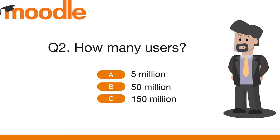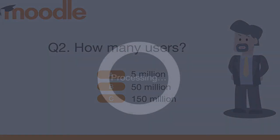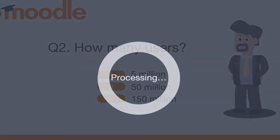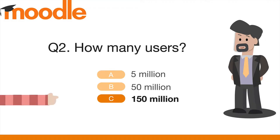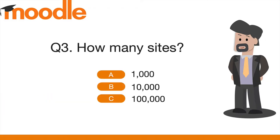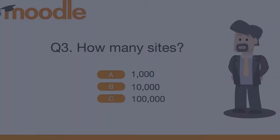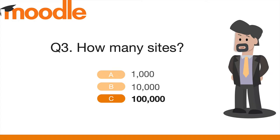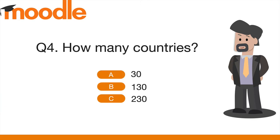How many registered users — five million, fifty million, or one hundred and fifty million? How many registered Moodle sites — one thousand, ten thousand, or one hundred thousand? How many registered countries — thirty, one hundred and thirty, or two hundred and thirty?